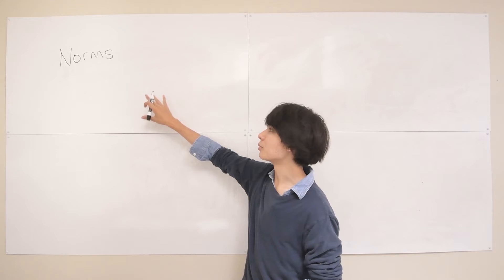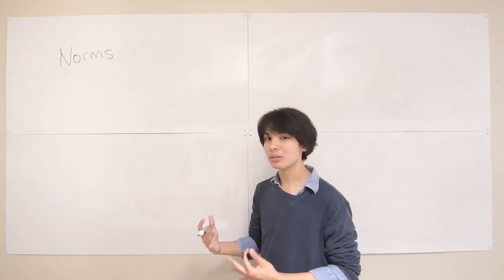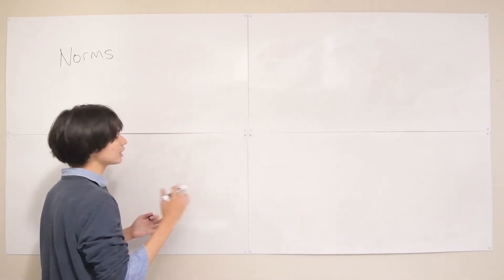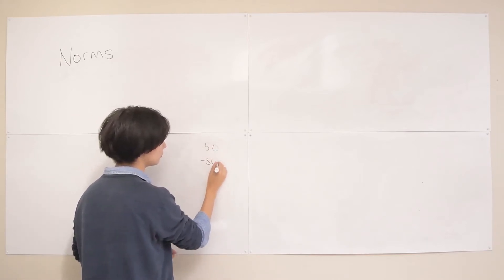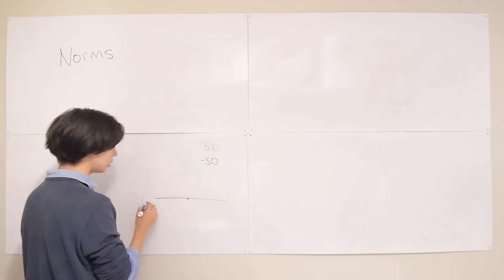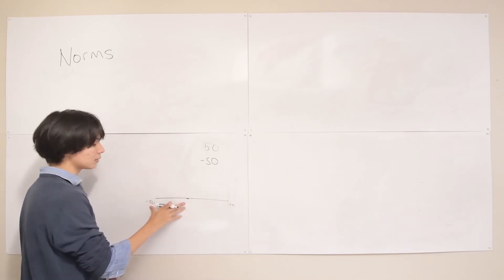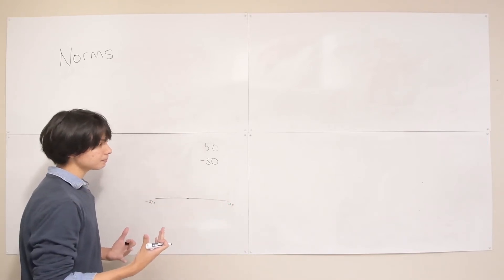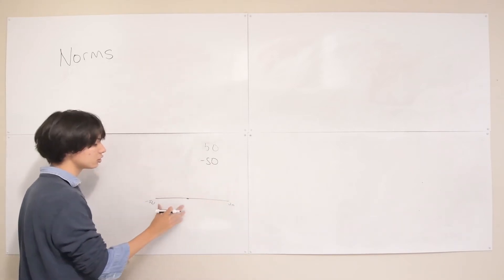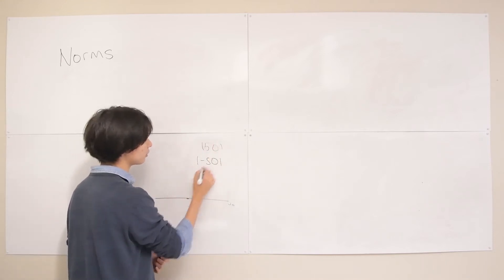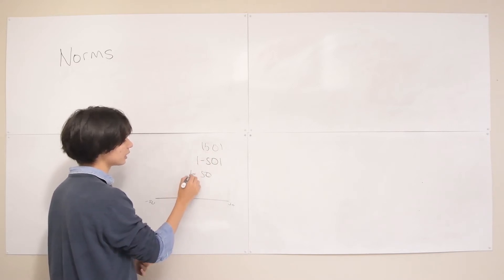A norm is how we measure the magnitude of a vector or matrix, but let's start with scalars. How do we measure the magnitude of a scalar? You take the absolute value. So if we have a number 50 and a number negative 50, you can think about these numbers being the same distance away from 0 — the same magnitude, but one's in one direction and one's in the other. We distill this to just the magnitude by taking the absolute value, and these both return 50.